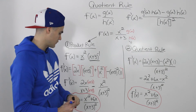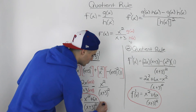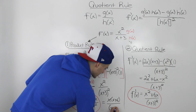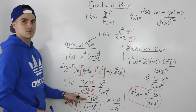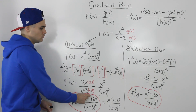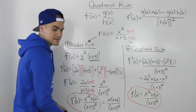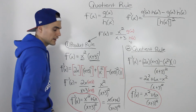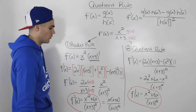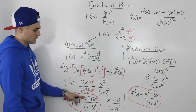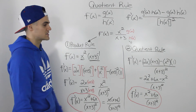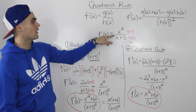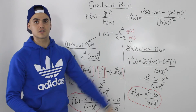One more thing before finishing: you could also factor the numerator. The numerator x squared plus 6x could factor as x times x plus 6, still over x plus 3 squared. You always want to factor the numerator because sometimes terms will cancel with the denominator. For example, if a bracket were x plus 3, it could cancel with one factor of x plus 3 in the denominator. In this case it doesn't happen, but always check. Main point: whenever you have a function over another function and need the derivative, always use the quotient rule.